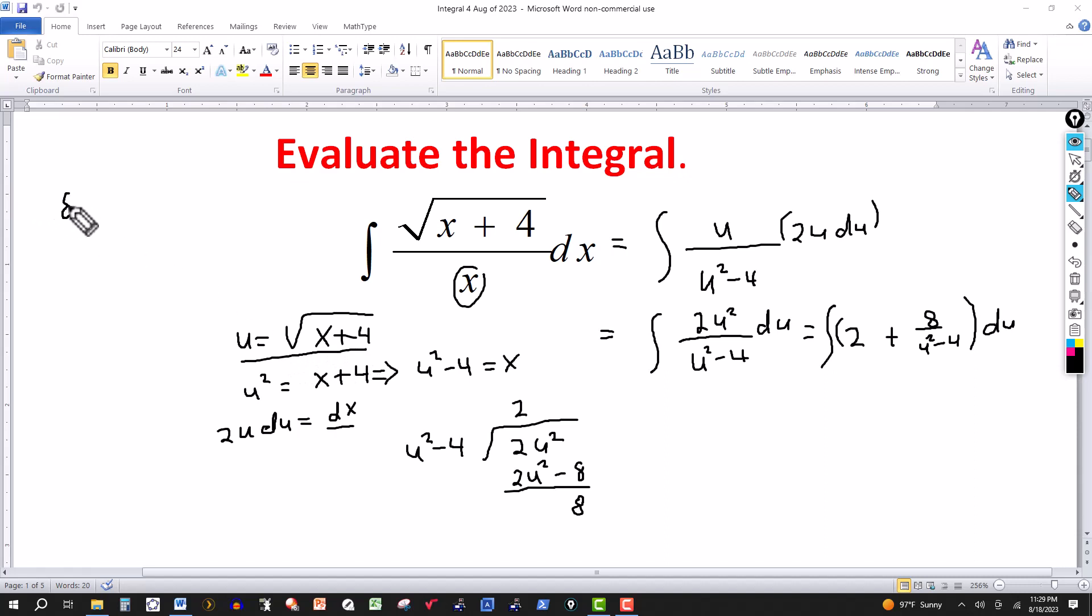But I'm going to take this portion here, 8 over u squared minus 4, and let's factor that out into u minus 2, u plus 2. And then partial fraction decomposition, I'd have a constant.